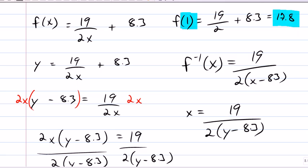So, I'll grab my calculator, 19 divided by 2 times 17.8 minus 8.3. And we're back to 1.